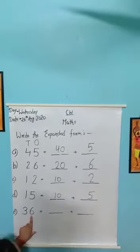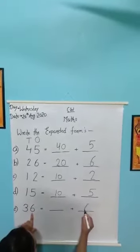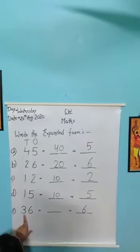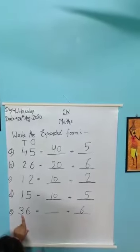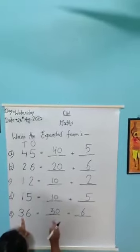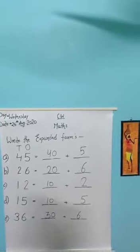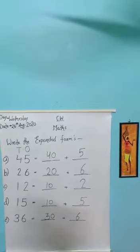Yahan pe, thirty-six hai. Pehle six ki value kya hai? Six hai, kyunki single number hai. Ones hai, aur three. Tens hai yahan pe. Yahan pe hum likhenge, thirty. So, thirty plus six, barabar kya hota hai beta? Thirty-six.